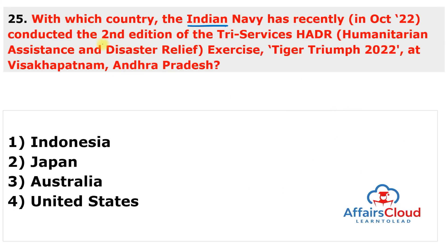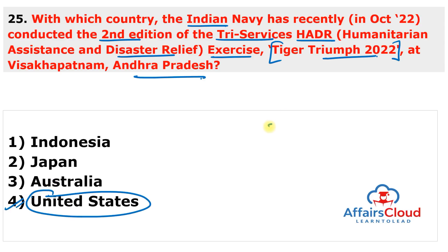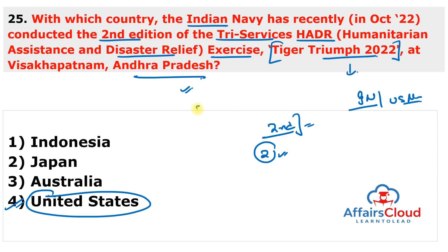Next question: with which country did the Indian Navy recently conduct the second edition of the tri-services Humanitarian Assistance and Disaster Relief exercise known as Tiger Triumph 2022 at Visakhapatnam, Andhra Pradesh? The answer is the United States of America. This is the second edition of the India-US tri-service Humanitarian Assistance and Disaster Relief exercise Tiger Triumph 2022, held at Visakhapatnam, Andhra Pradesh, between the Indian Navy and the US Navy, in line with the growing strategic cooperation between the two countries. The first Tiger Triumph exercise was held in 2019 in Visakhapatnam.